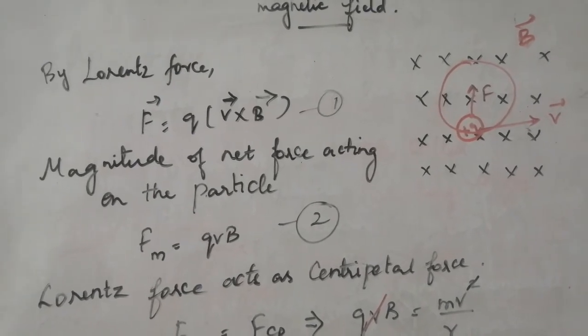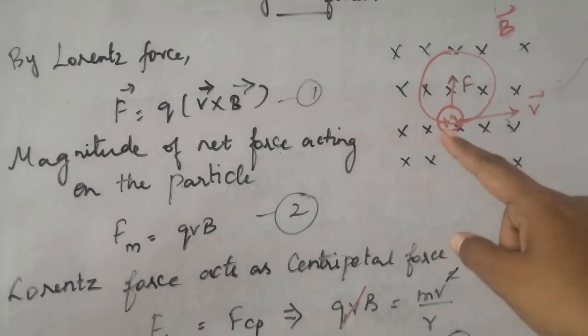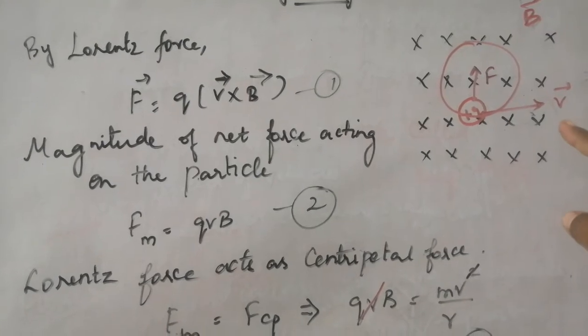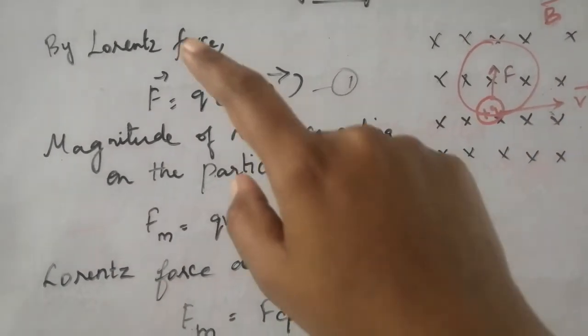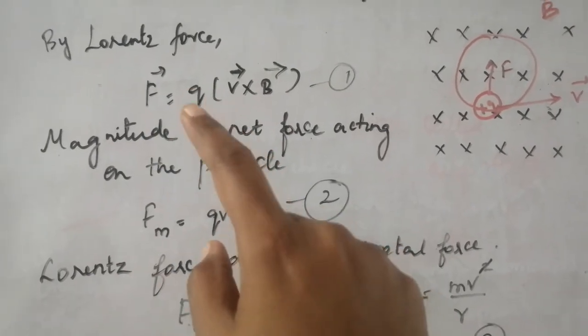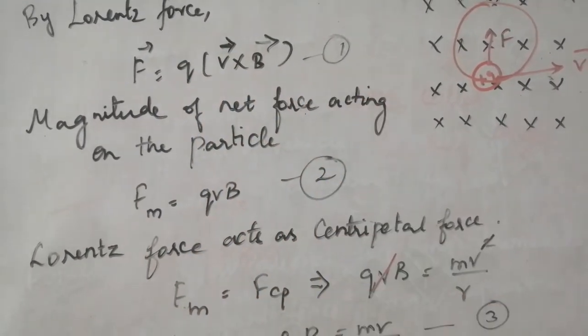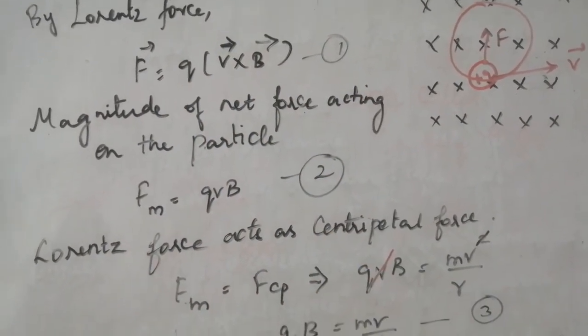By Lorentz force, the charge is Q and it is moving with velocity V in the magnetic field B. So by Lorentz force, F is equal to Q into V vector cross B vector. This is the first equation.